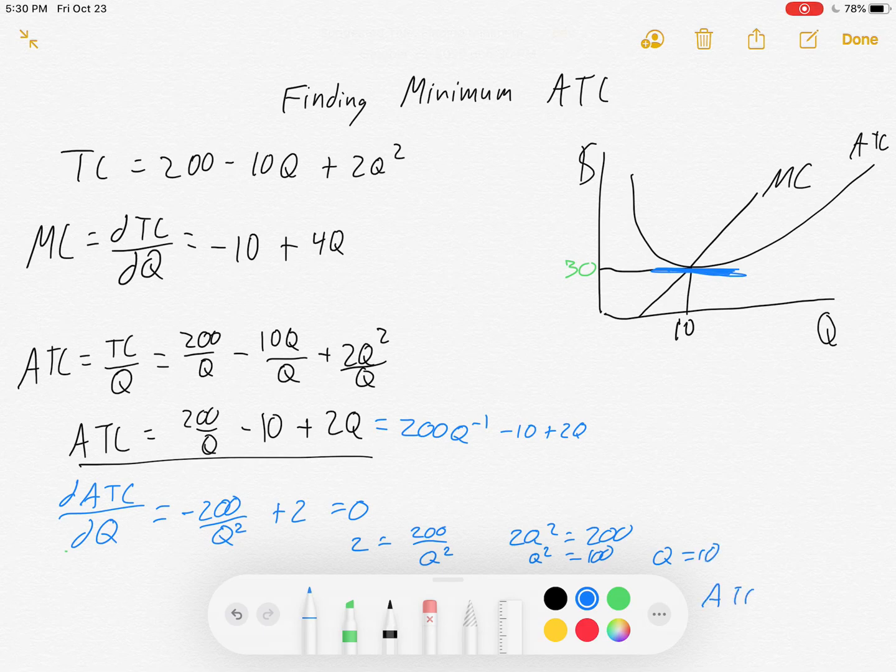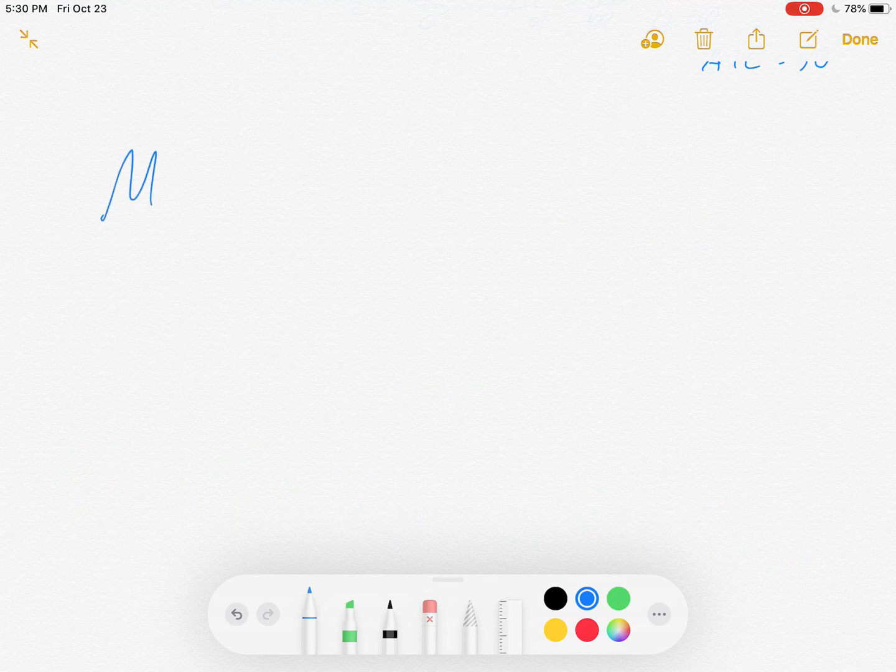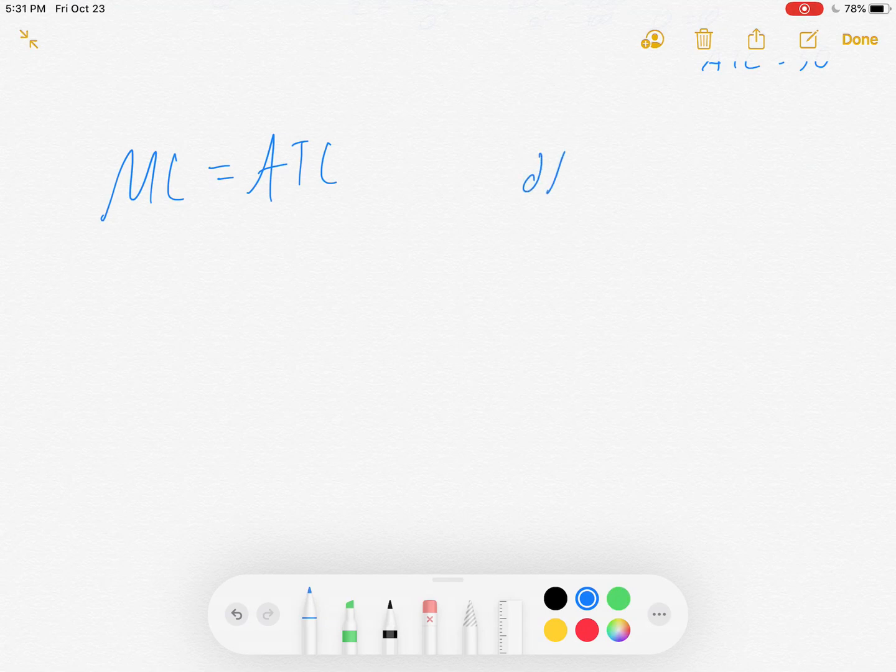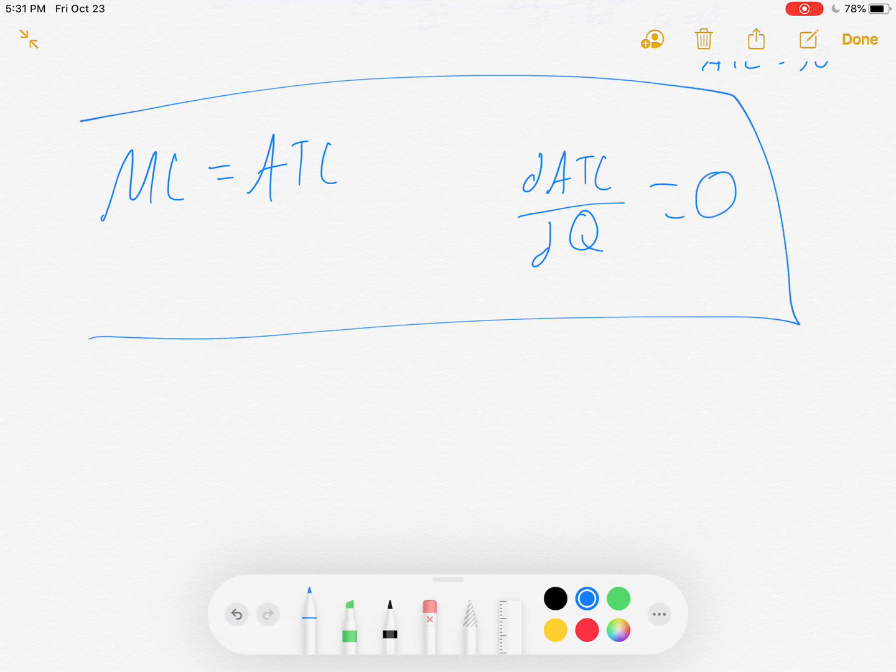We're also going to get that the average total cost equals 30. So, it doesn't matter which way you go. They will both give you the same options. There's the set the marginal cost equal to the average total cost approach. And there's the set the derivative of your average total cost with respect to Q equal to 0 approach. Those get the same information. And you'll be fine either way.